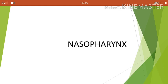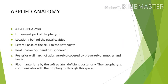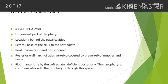Now let's begin with the nasopharynx. Firstly, as for applied anatomy, the nasopharynx is also known as the epipharynx. It is the uppermost part of the pharynx. Its location is just behind the nasal cavities. The extent — which is important — it extends from the base of the skull to the soft palate, or equivalently, to the level of the horizontal plane passing through the hard palate.